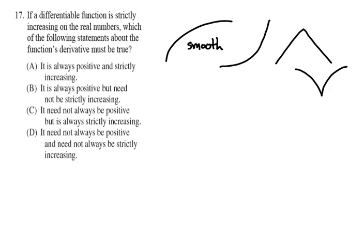Unlike the second two examples where you have what's called a sharp turn somewhere in the graph. So what makes a function differentiable? First of all, it has to be continuous — it can't have any breaks in the curve. Second, there can't be any sharp turns in the curve. And third, there can't be any vertical tangents, meaning where the tangent line would be a vertical line.